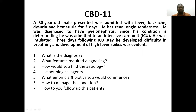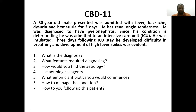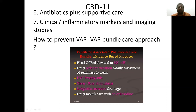Based on the etiological agents, what empiric antibiotics should you initiate? Anti-acinetobacter therapy is key — we can give carbapenem plus or minus amikacin. Antibiotic plus supportive care including oxygen should be provided. We monitor the response to treatment with clinical improvement, inflammatory markers, and imaging studies. Prevention is very important — this is done through the ventilator-associated pneumonia care bundle, a bundle care approach with multiple activities.